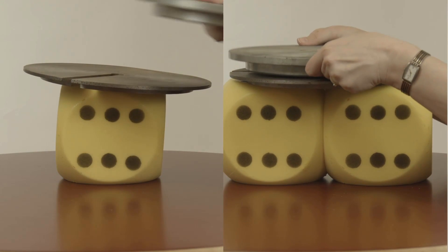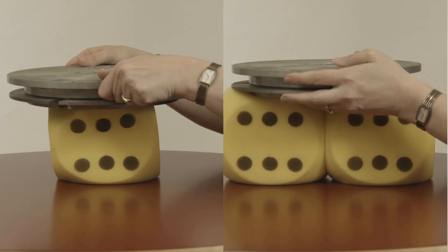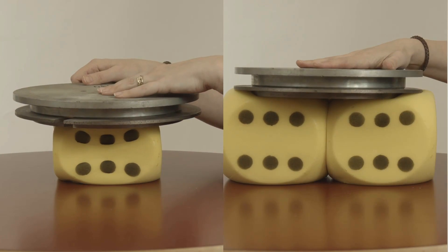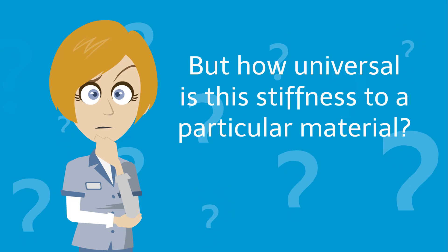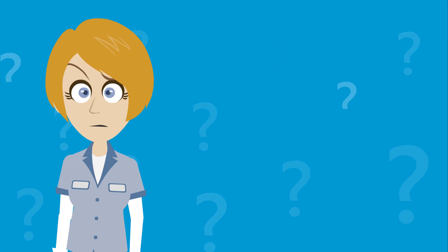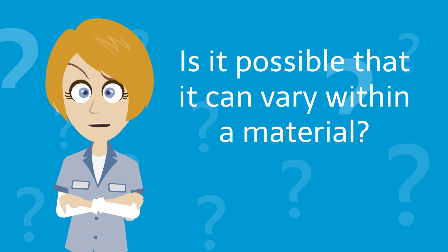We have already seen that materials will deform under load, and that this deformation can be related to a material property known as stiffness. But how universal is this stiffness to a particular material? Is it possible that it can vary within a material or along different directions within a material?